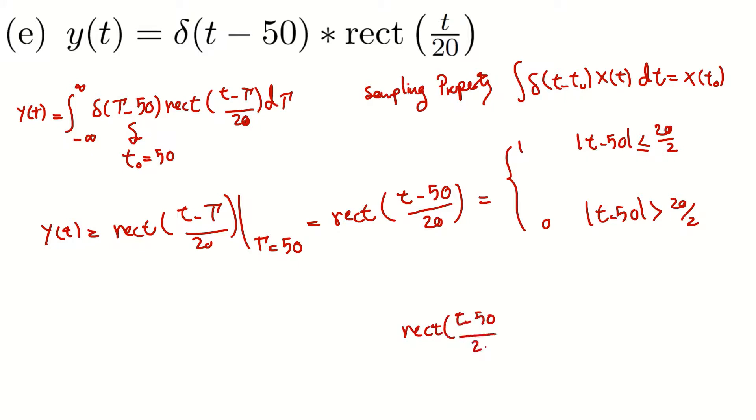Equals 1 if t is between, I would say 60 and, so if I take this out, then that would be 40. And the value of the signal is 0 if t is larger than 60 or t is smaller than 40.